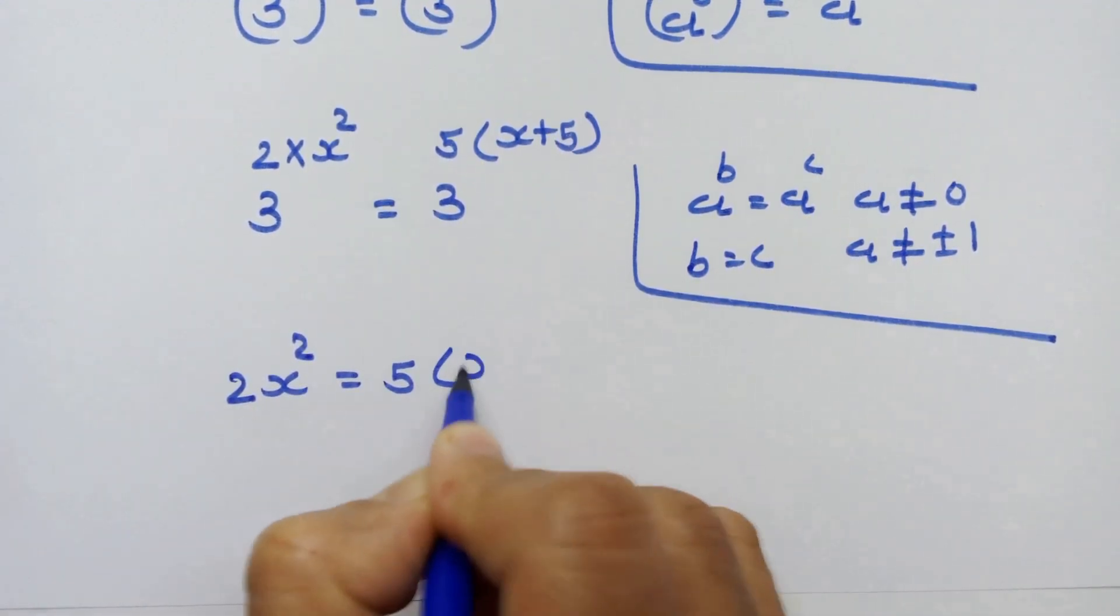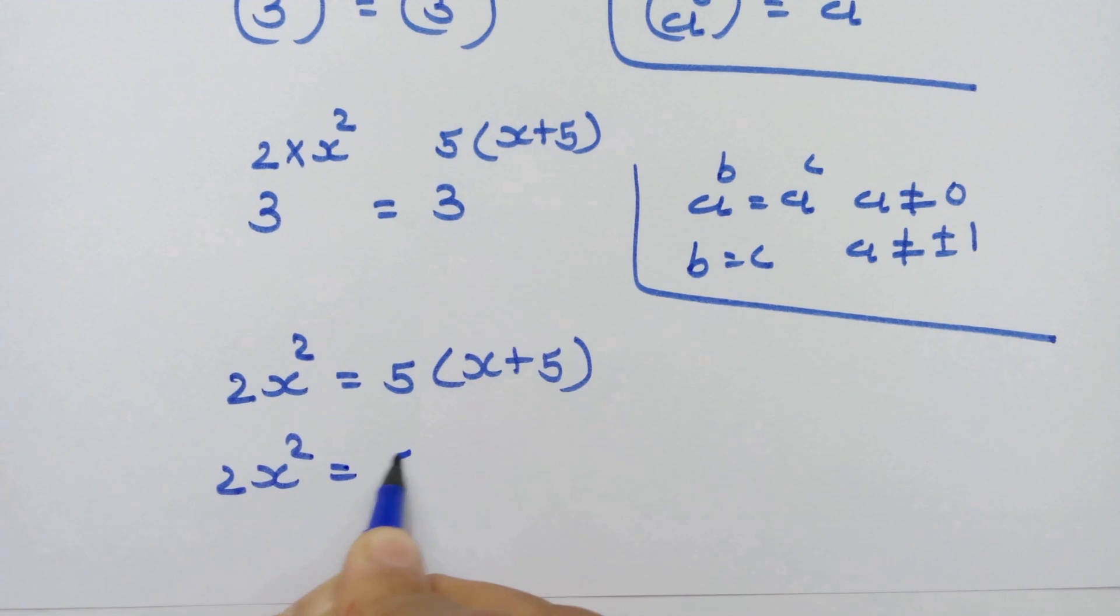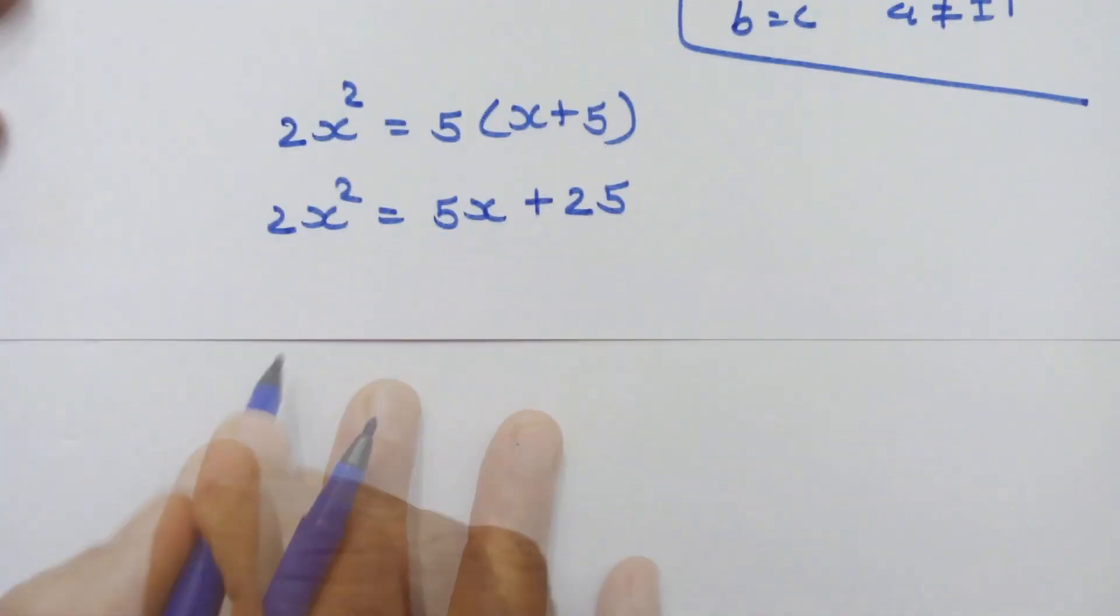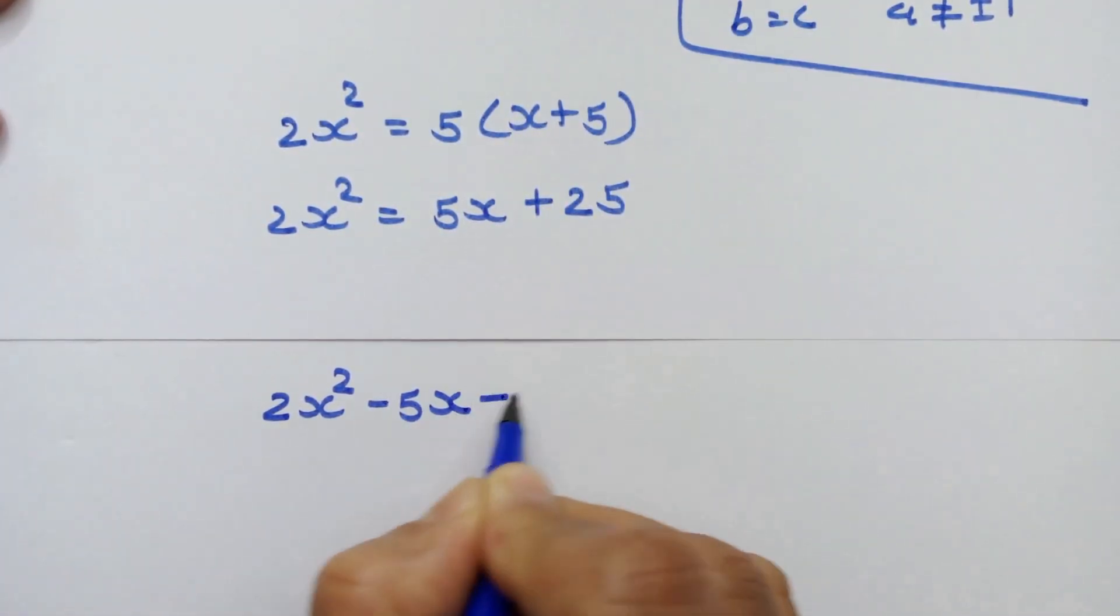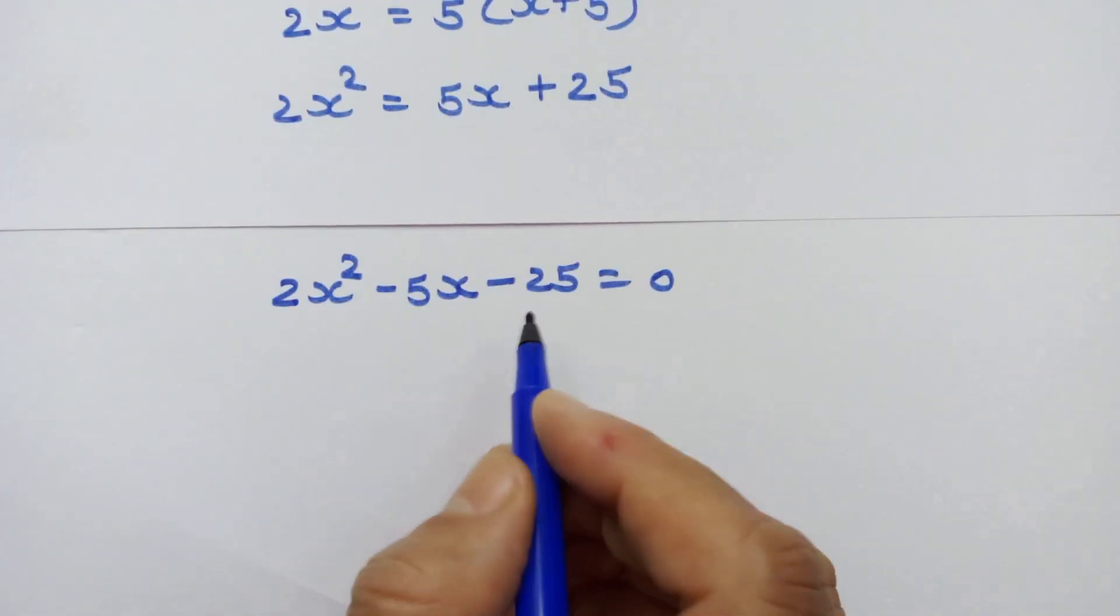Let's open this bracket: 2x^2 = 5x + 25. Taking everything to the left hand side: 2x^2 - 5x - 25 = 0. We have a quadratic equation here.